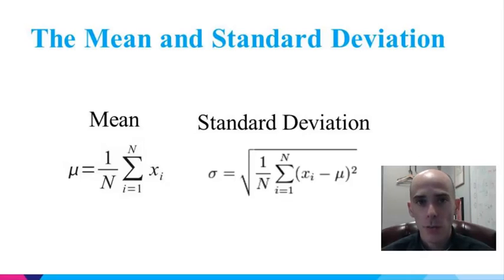To compute the standard deviation, we simply subtract the mean from each value. We square those differences to make them positive. Then we divide the sum of all of those differences by the number of measurements. And then we take the square root of this product.